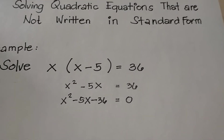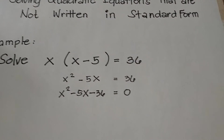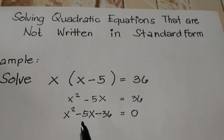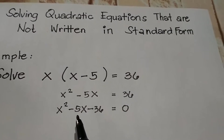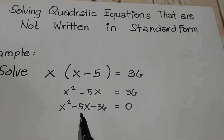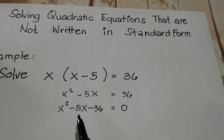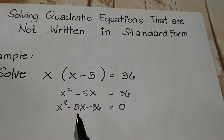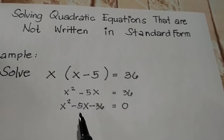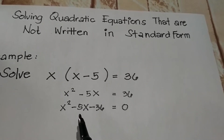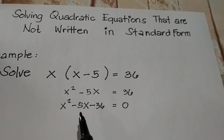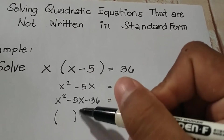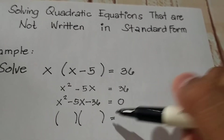Looking at our equation, x squared minus 5x minus 36 is equal to 0 — is it already in standard form? Yes, of course it is now in standard form. This is now the time to find the values of x. You can use any of the four methods for solving quadratic equations: completing the square, extracting square roots, factoring, or the quadratic formula. As of this moment, let's make use of factoring.